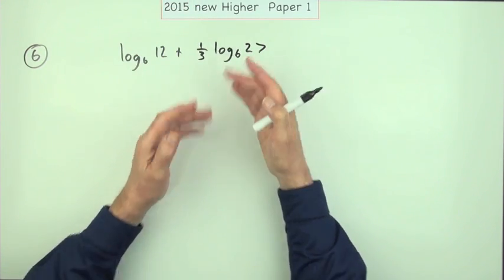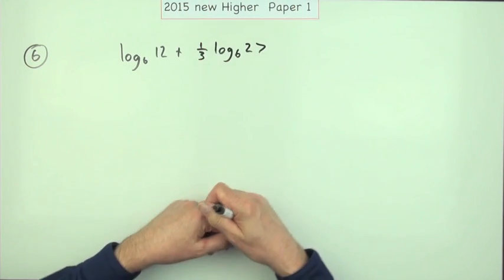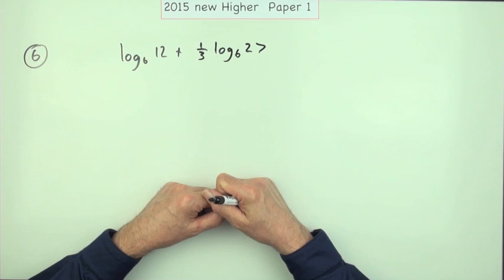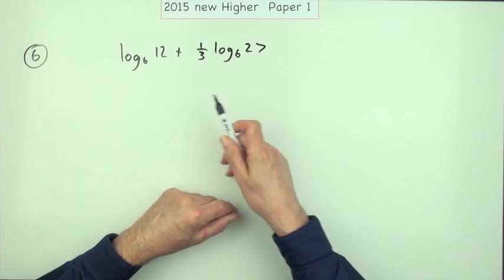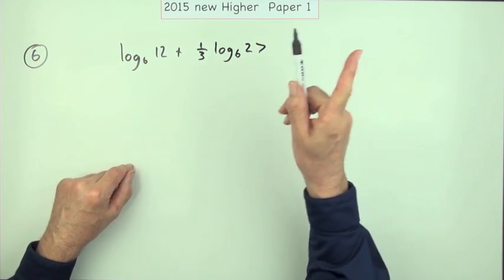Log base 6 of 27 means what power of 6 gives me 27. If I knew them, that would give me my answer, but I don't—or rather, they're not that nice. So instead, you will use...